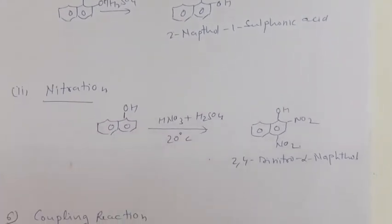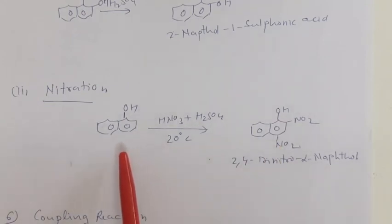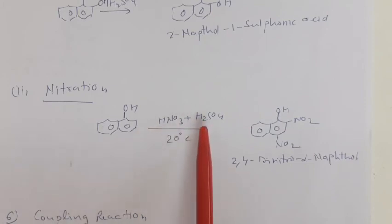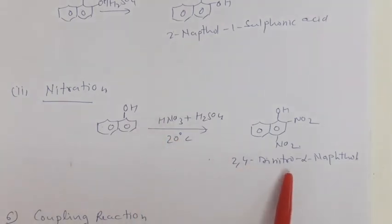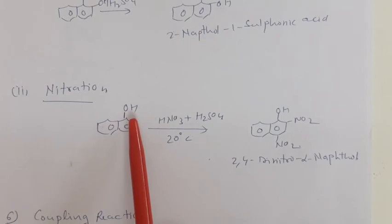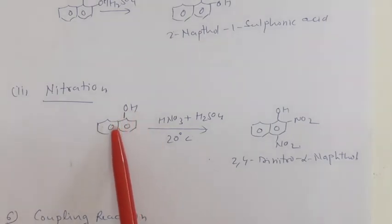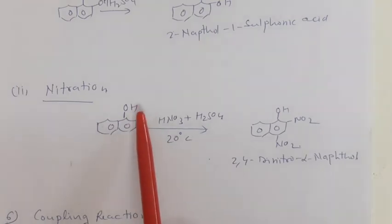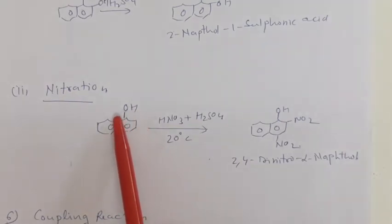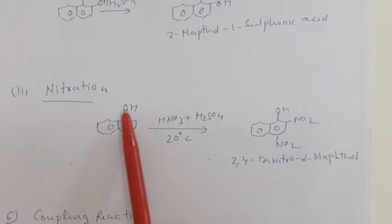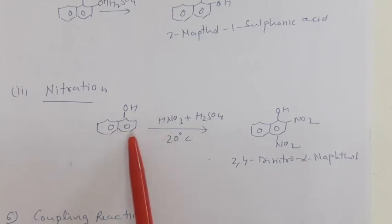Similar to benzene, alpha naphthol also undergoes nitration reaction with concentrated nitric acid at 20 degrees centigrade, and we get 2,4-dinitro-alpha-naphthol. This is because the OH group increases the electron density on the ring as the phenoxide ion, in which the charge undergoes resonance and is stabilized by resonance. The charge on the naphthalene ring increases, so it undergoes nitration reaction easily and is very susceptible to electrophilic attack.